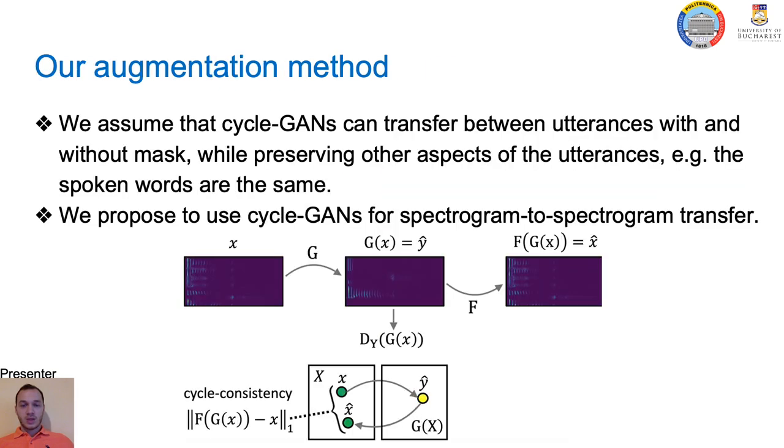Our data augmentation method is inspired by the success of cycle consistent GANs in image-to-image translation for style transfer. Based on the assumption that style is easier to transfer than other aspects, for example geometrical changes, cycle GANs can replace the style of an image with a different style while keeping its content. In a similar way, we assume that cycle GANs can transfer between utterances with and without mask while preserving the other aspects of the utterances, such as the spoken word. We therefore propose to use cycle GANs for utterance-to-utterance transfer, which in our case is spectrogram-to-spectrogram.